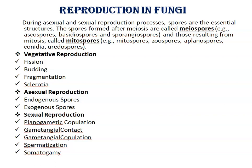The spores formed after meiosis are called meiospores. Examples of meiospores are Ascospores, Basidiospores, and Sporangiospores. Those resulting from Mitosis are called Mitospores. Examples of Mitospores are Zoospores, Aplanospores, Conidia, Uredospores, etc.